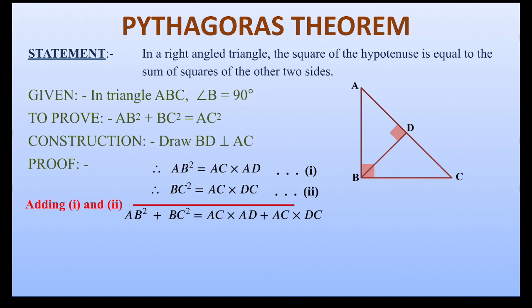Now on the right-hand side, we take out common AC. So we have AC × (AD + DC). From the diagram, we can see that AD + DC is the entire line segment AC. So we have on the right-hand side AC × AC, that is AC².